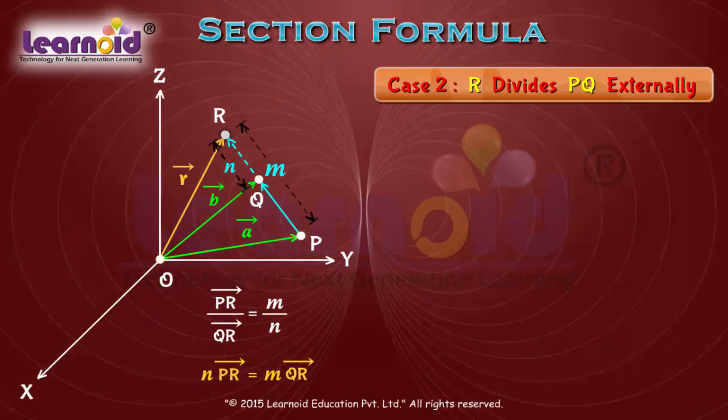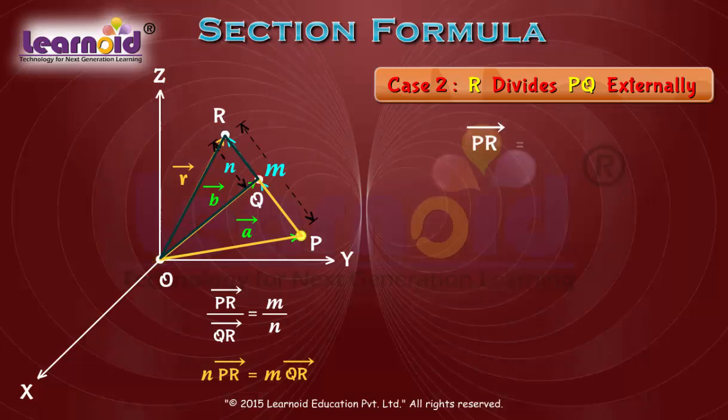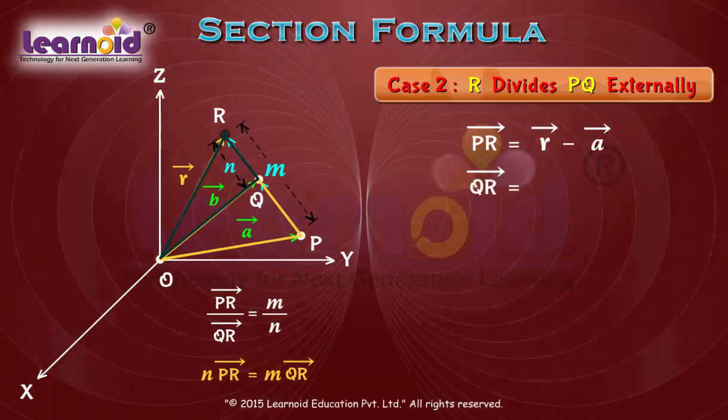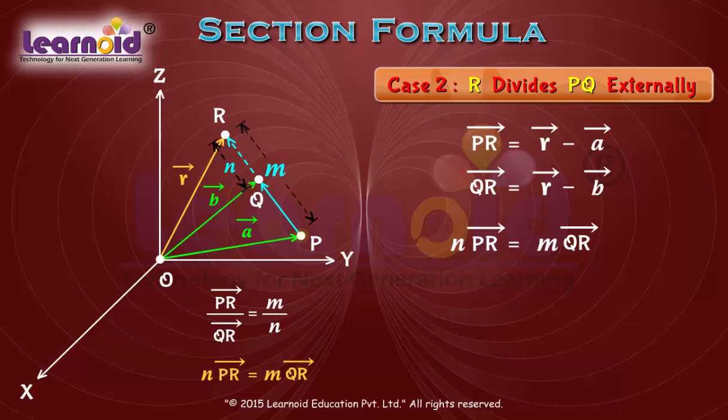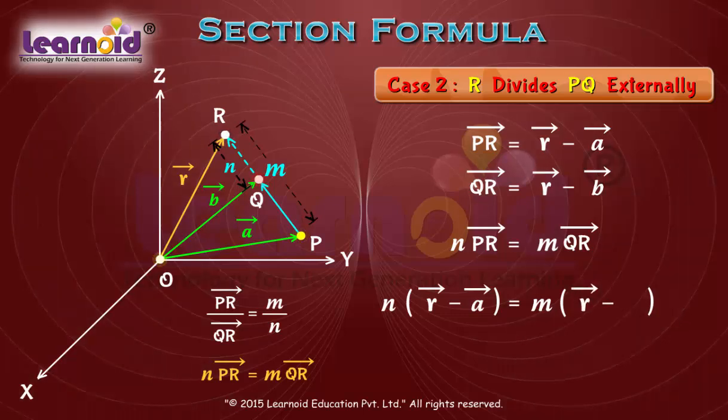Now from triangles OPR and OQR, we can write PR vector is equal to r vector minus a vector and QR vector is equal to r vector minus b vector. Substituting in relation n times PR vector is equal to m times QR.